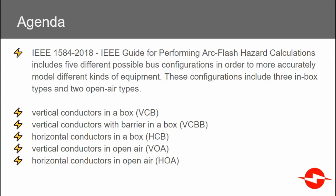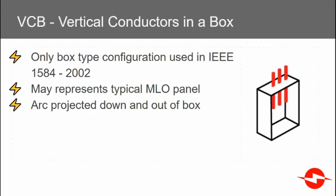These configurations include three box types and two open air types. The first box type, vertical conductors in a box, was the only type of configuration used in the previous version of 1584. This may represent a typical main lug only panel. The arc is projected down and out of the box.